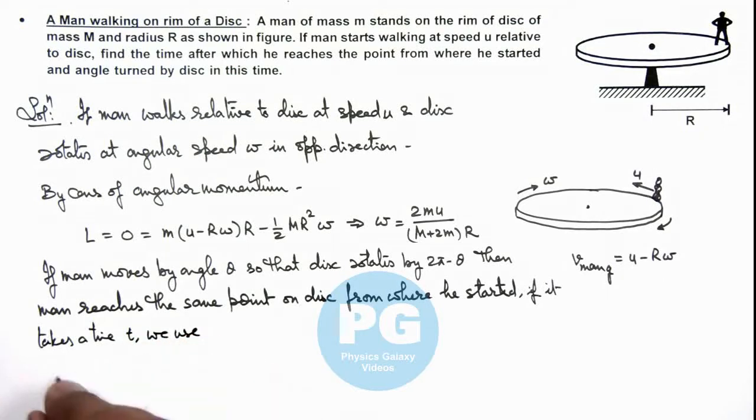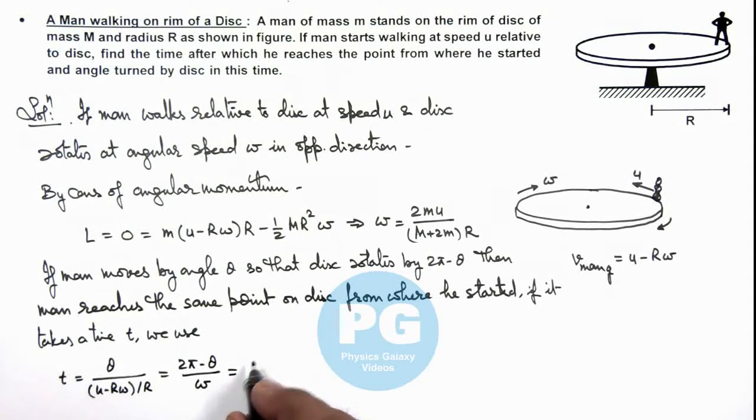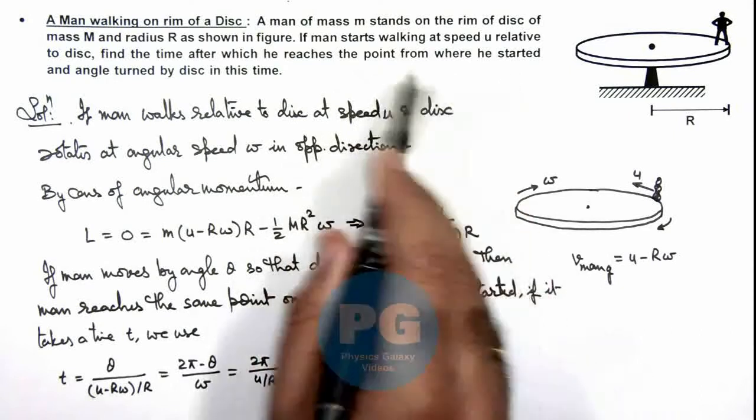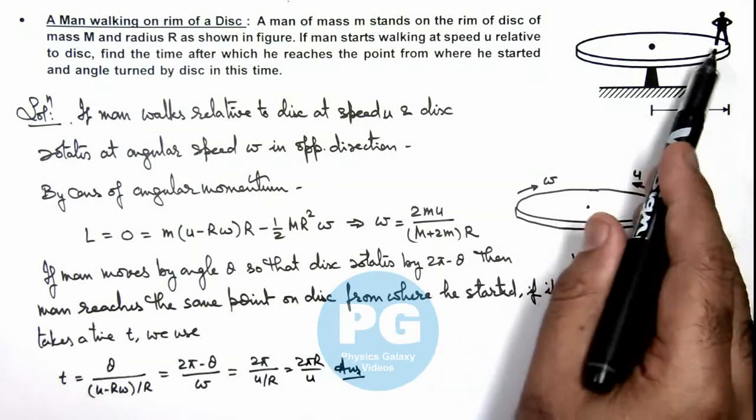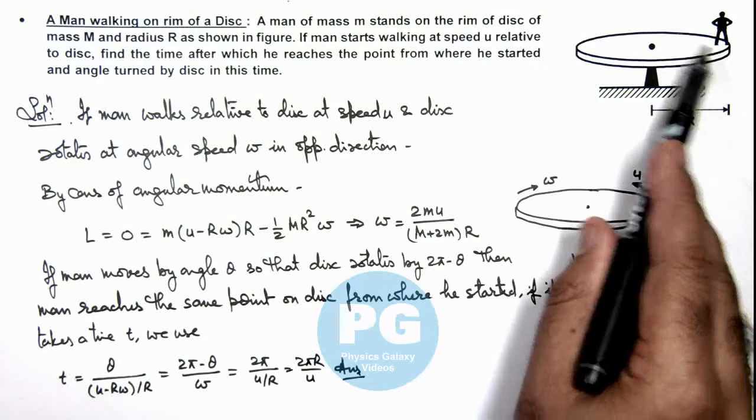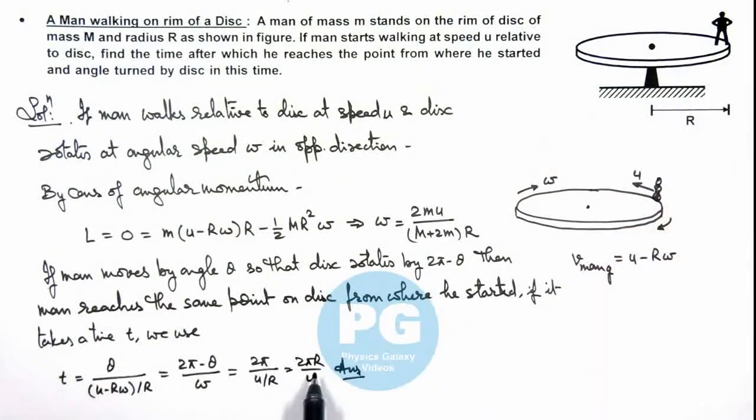We can write t equals theta divided by (u - r omega)/r. The same will be 2π minus theta divided by omega. If we add the numerators and denominators, this will give us 2π divided by u/r, so this is 2πr/u. This is the time after which the man reaches the point from where he started. This is the result, and this could have been directly calculated because the circumference of the disc is 2πr and if the man is walking at a speed u relative to the disc, we can directly calculate this time as 2πr/u.